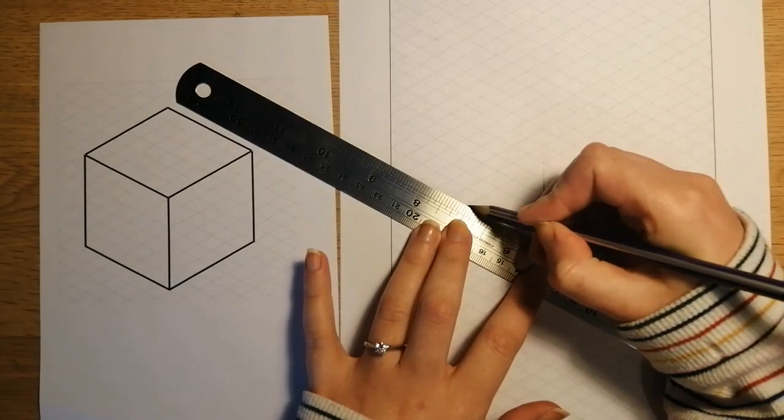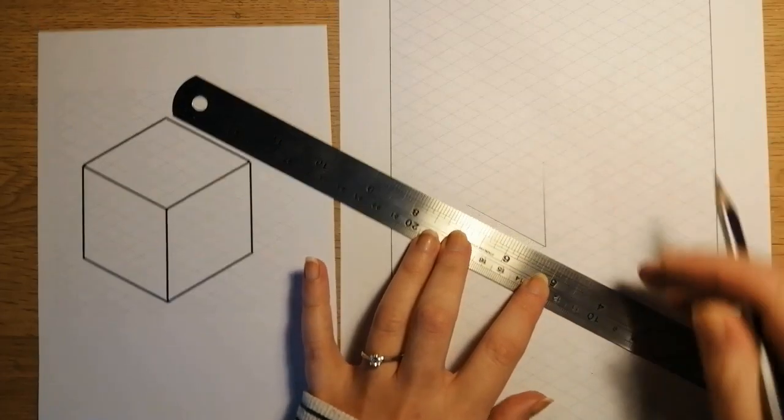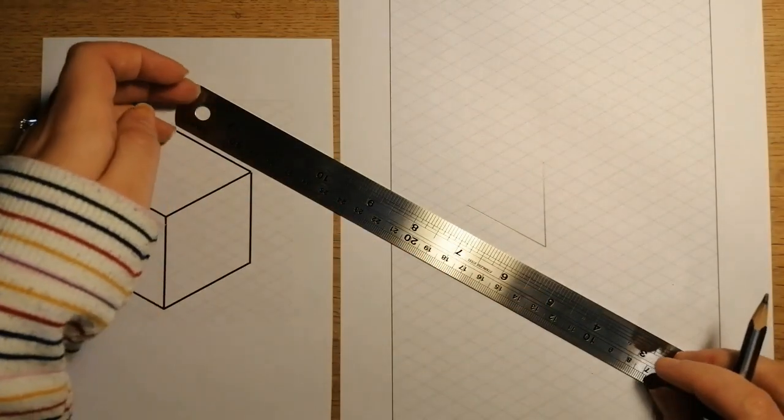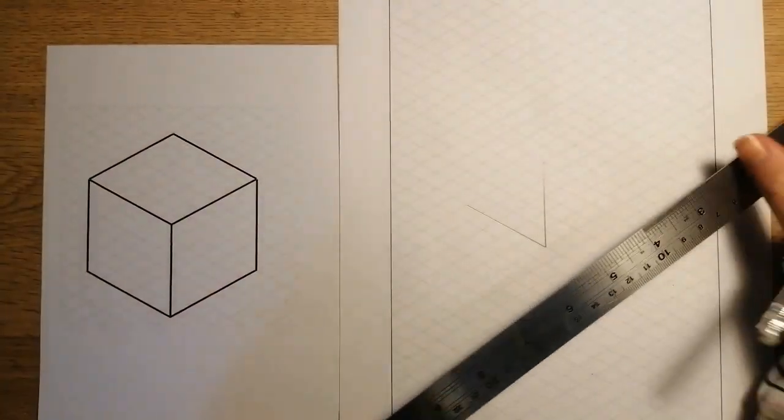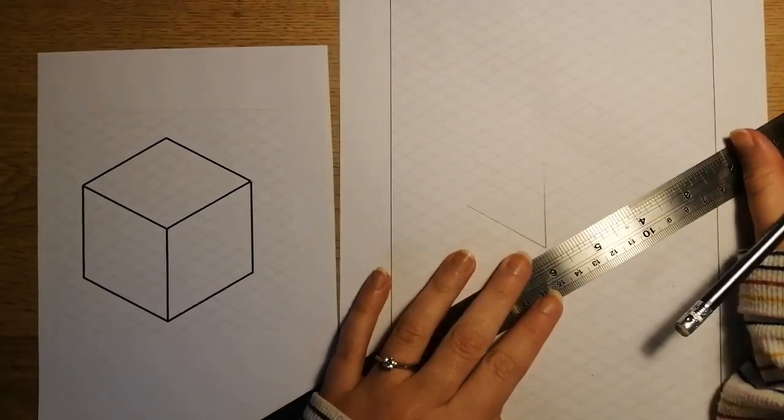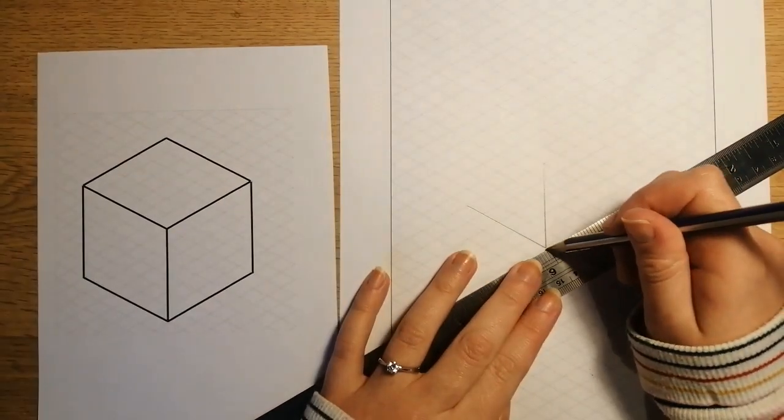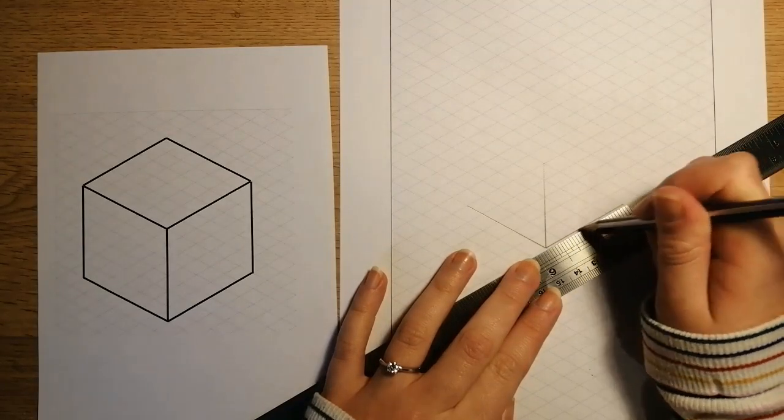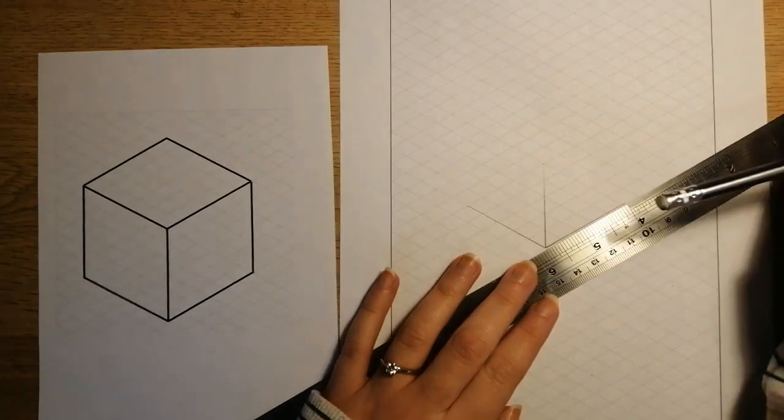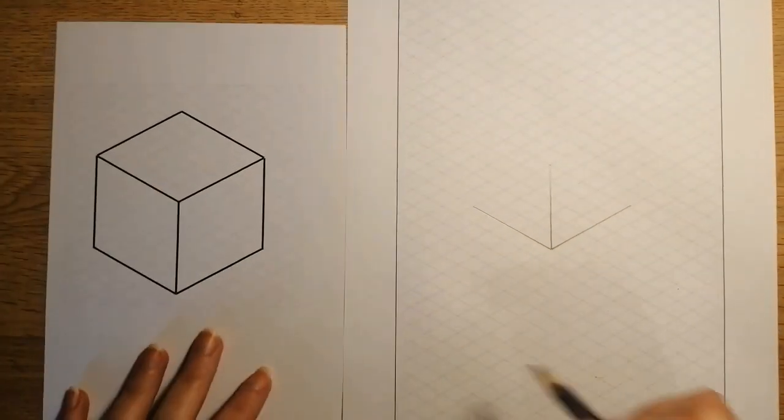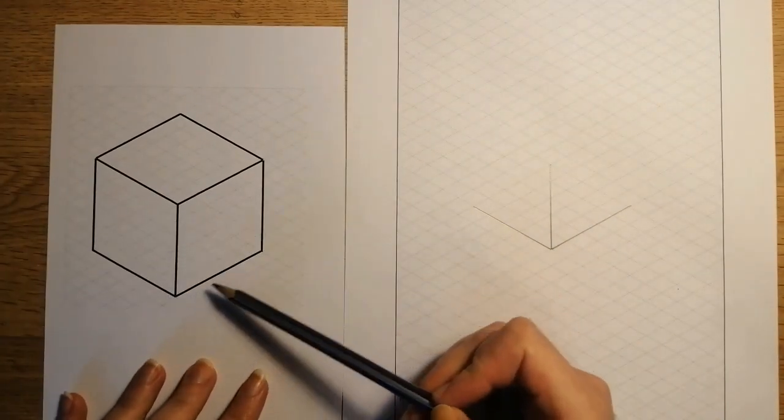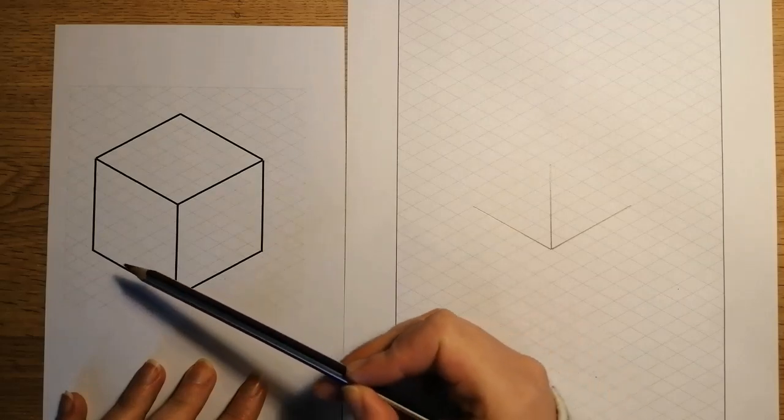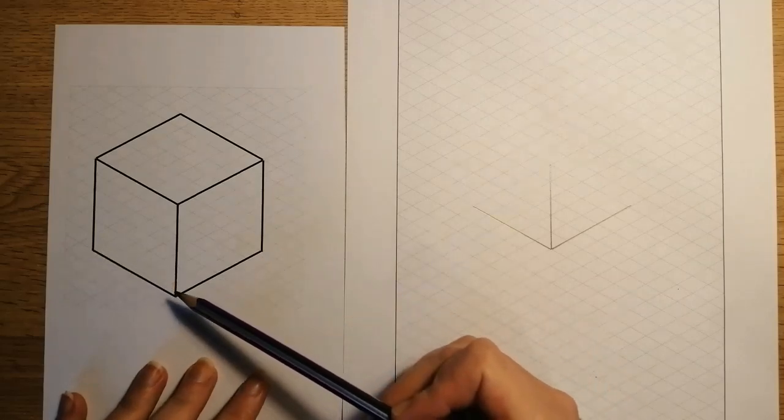And then I'll just go over it to make that a little bit darker. And that's my left hand side. And then over on the other side, just exactly the same again. One, two, three, four, five. So I've now got the middle vertical line and then I've got the bottom edges here.